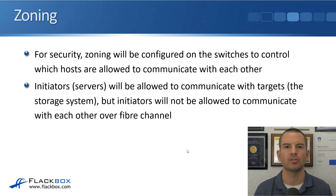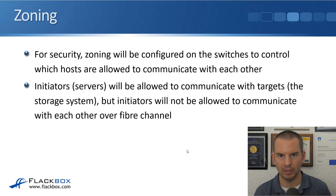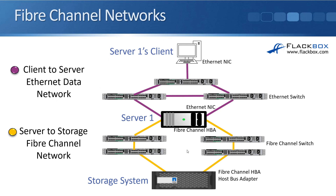This sometimes confuses people — you think, wait, my servers need to be able to talk to each other. Yes they do, but they don't need to do that over the Fibre Channel network. You've got your normal Ethernet network that your clients are connecting to the servers on, and the servers can connect to each other over that network. Over the Fibre Channel network, that's for storage — the servers connect to the storage system, they don't connect to each other over the storage network. So when we configure zoning on our Fibre Channel switches, we allow the servers to connect to the storage system but they won't have connectivity to each other.